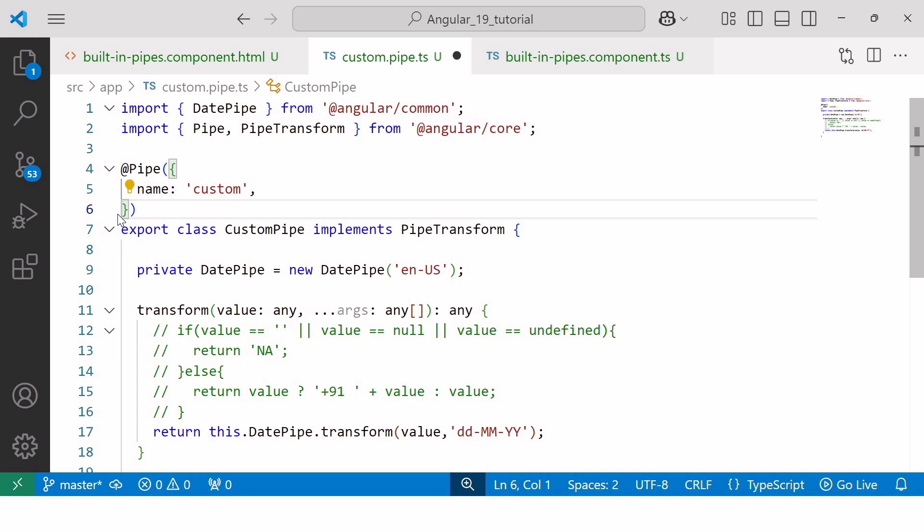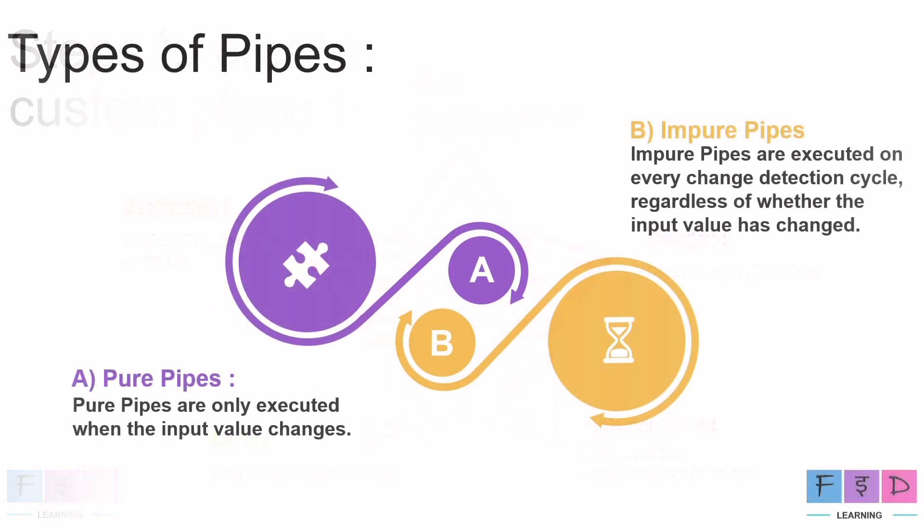Now let's understand the difference between pure and impure pipes. In Angular, pipes are used to transform and format data for display in templates, and they can be classified into two categories: pure pipes and impure pipes. Pure pipes are only executed when the input value changes, which improves performance. They have no side effects and Angular caches their output. Impure pipes, on the other hand, are executed on every change detection cycle regardless of whether the input has changed, and they are not cached by Angular.